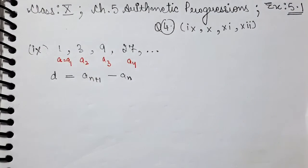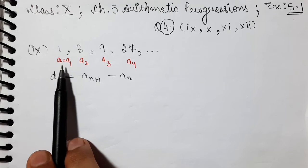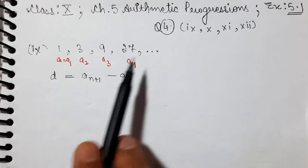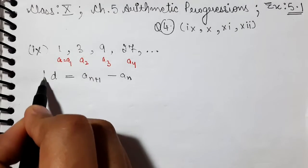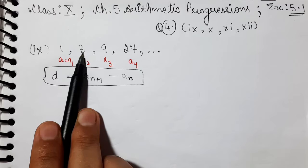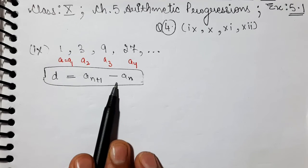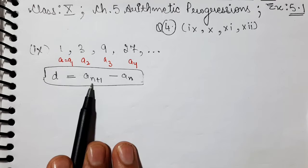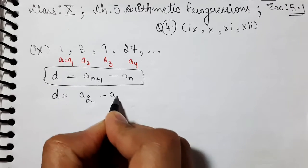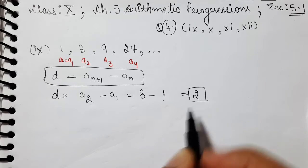Now, how do we check? In part 9, we have the sequence 1, 3, 9, and 27. First, I have marked them — this is the first term (A1), second term, third term, and fourth term. We check the common difference using the formula A(n+1) minus A(n). So first we find A2 minus A1: the second term is 3 and the first term is 1, so 3 minus 1 equals 2. In the first case, our D is 2.